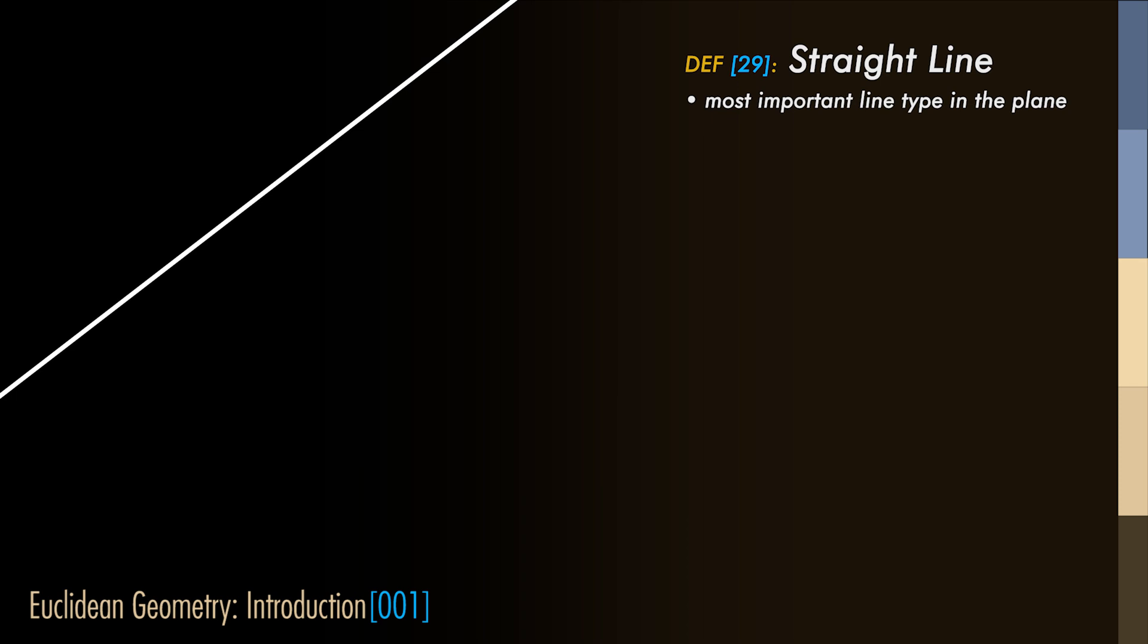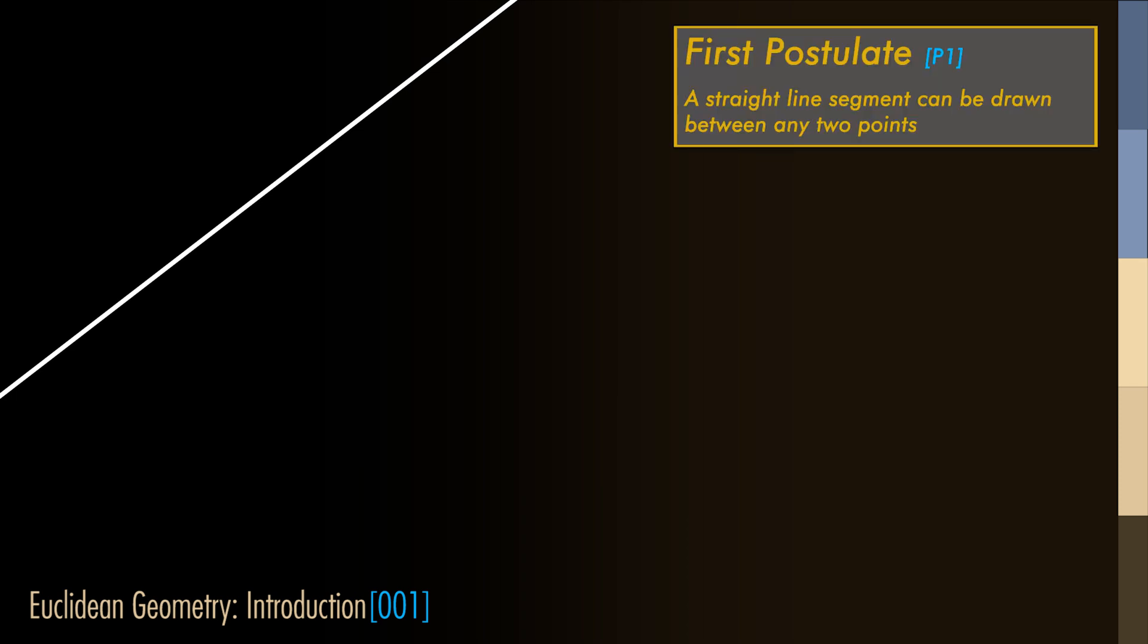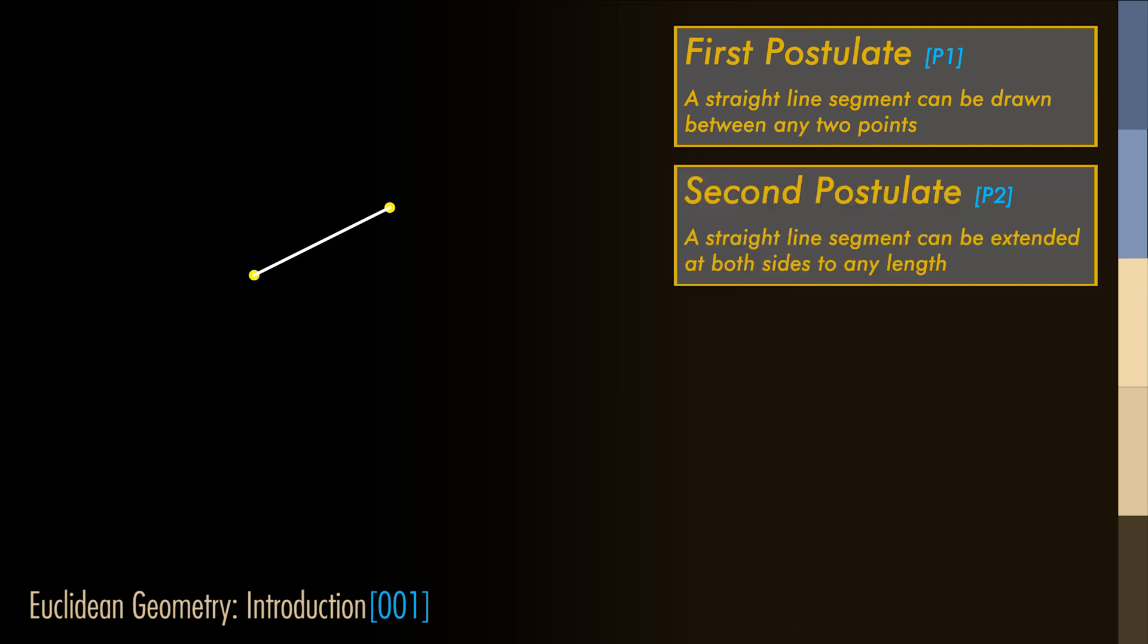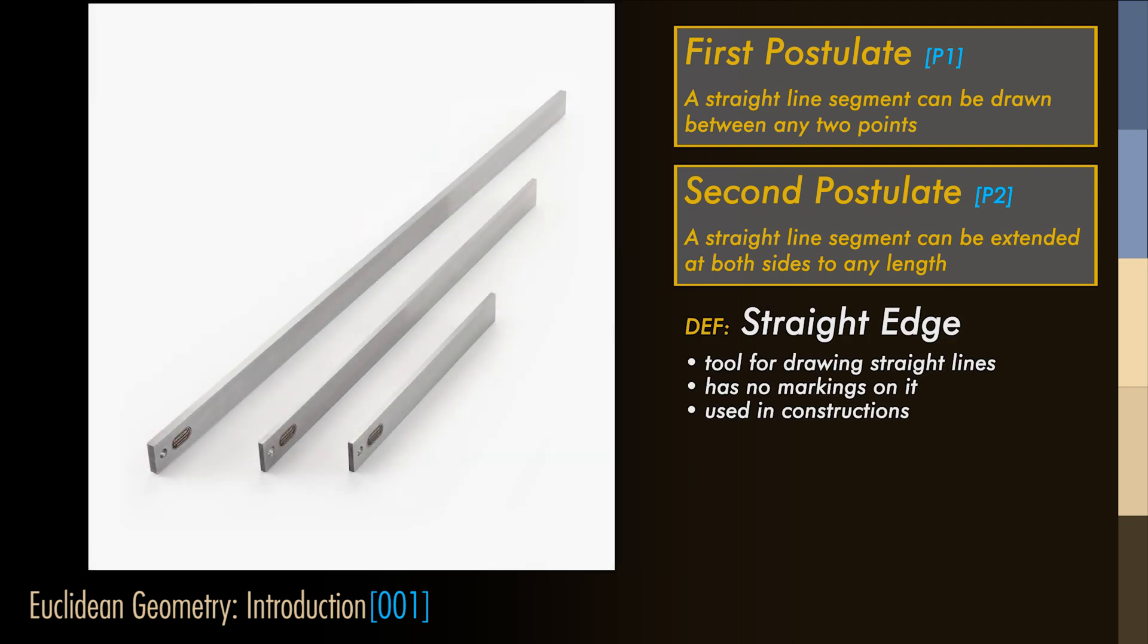The first postulate states that one can always draw a straight line from one point to another point. The second postulate states that a finite straight line can be extended continuously at both sides. These two postulates actually describe the basic operation of a straight edge.